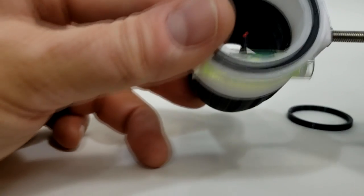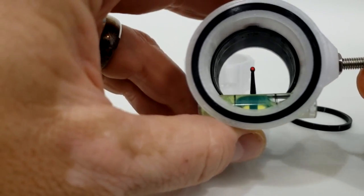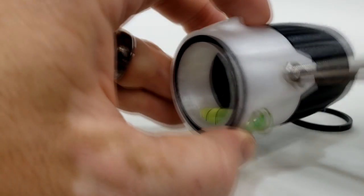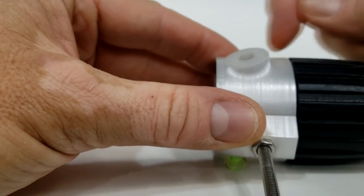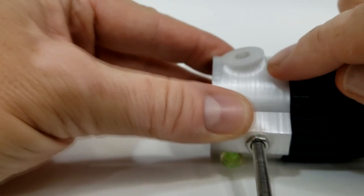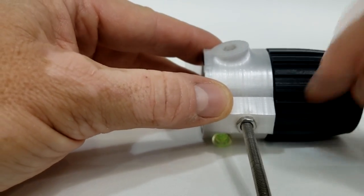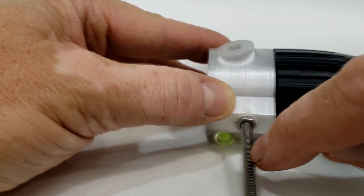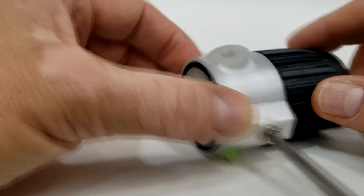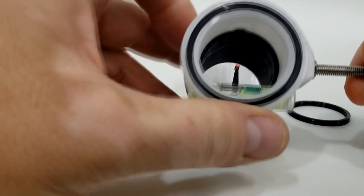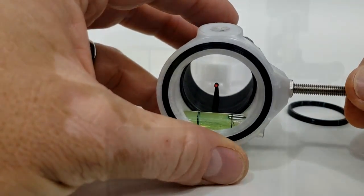This scope does feature what I call true center technology. So what that means is when I designed this scope, I designed it so that the face of the lens or the pin exactly lines up with the center of your 10-32 rod here. So let me mount this scope up and show you how that helps.